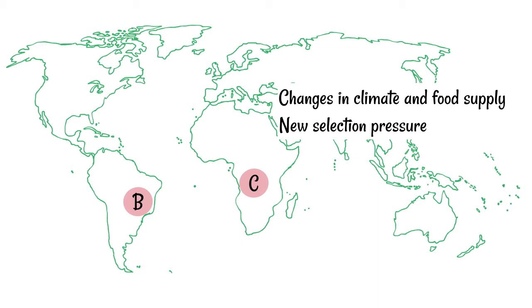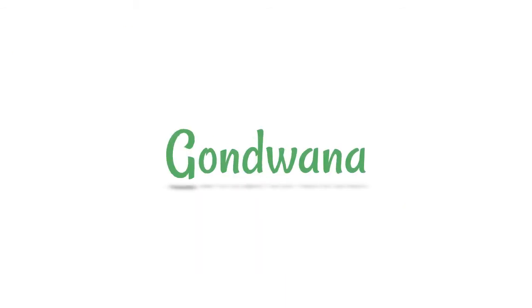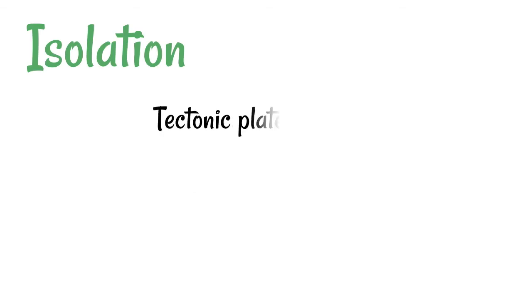If you want to learn more about the structure of the earth through geological history, you could research Pangaea and Gondwana — the names of ancient super continents. One method by which isolation can occur is tectonic plate movement, whereby the rock patchwork that makes up the earth is moved around and shifted, and this is how continents become separated.